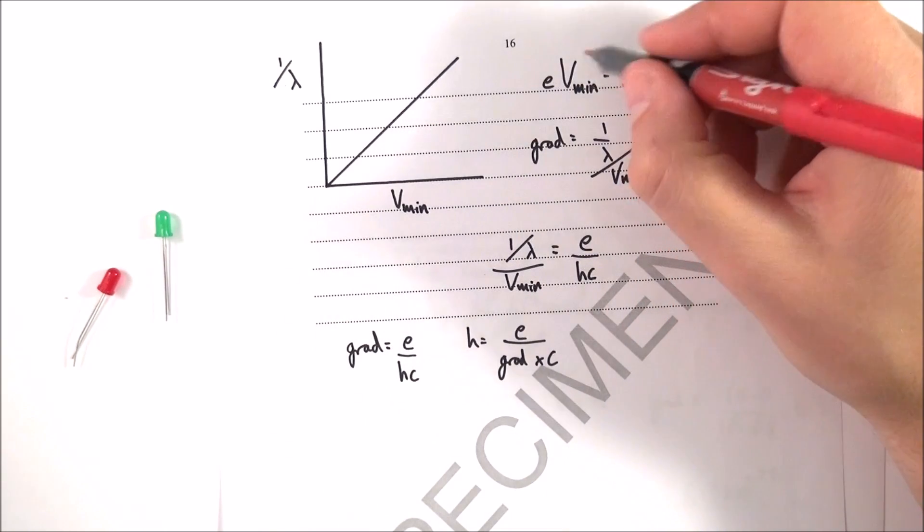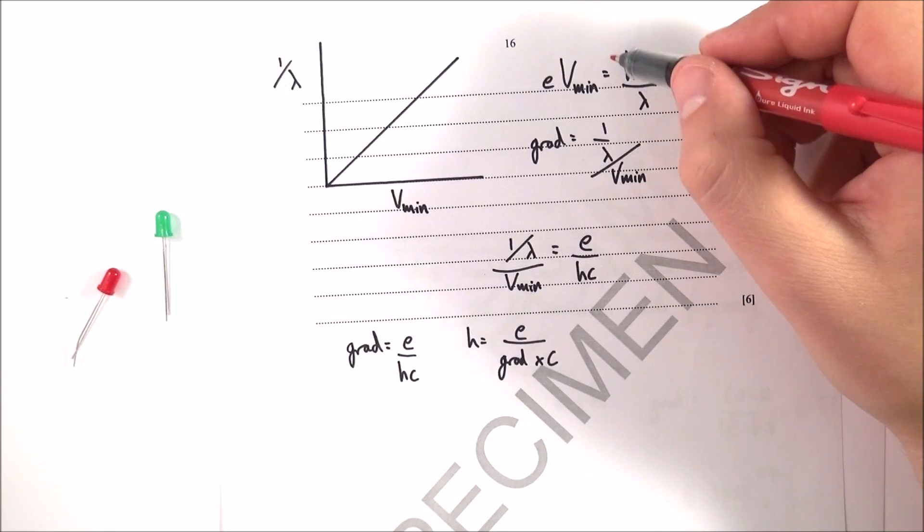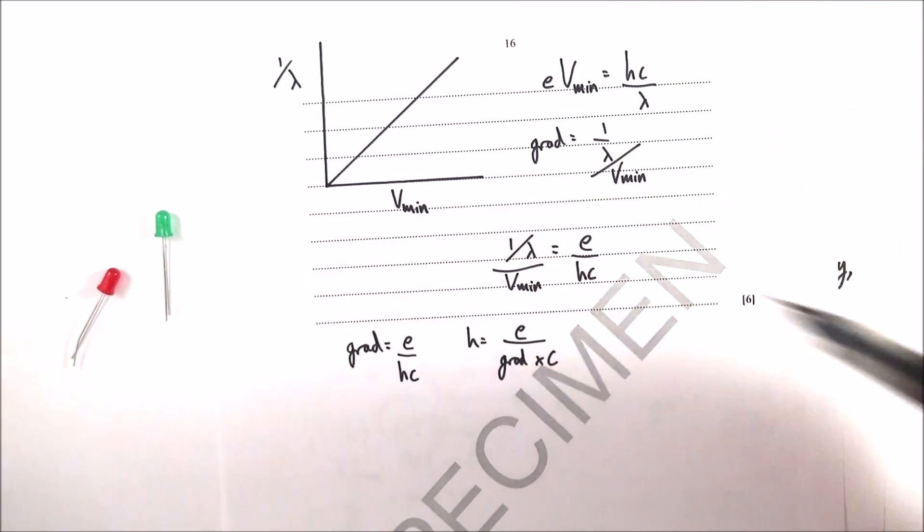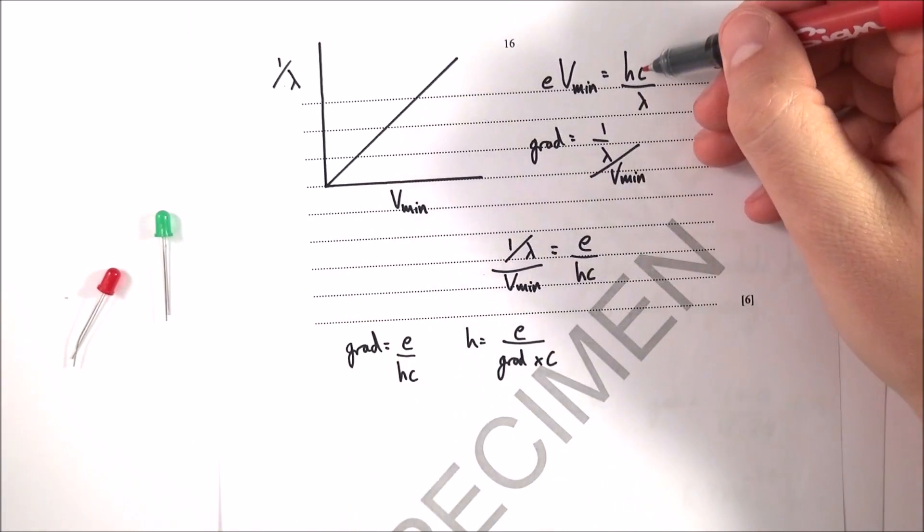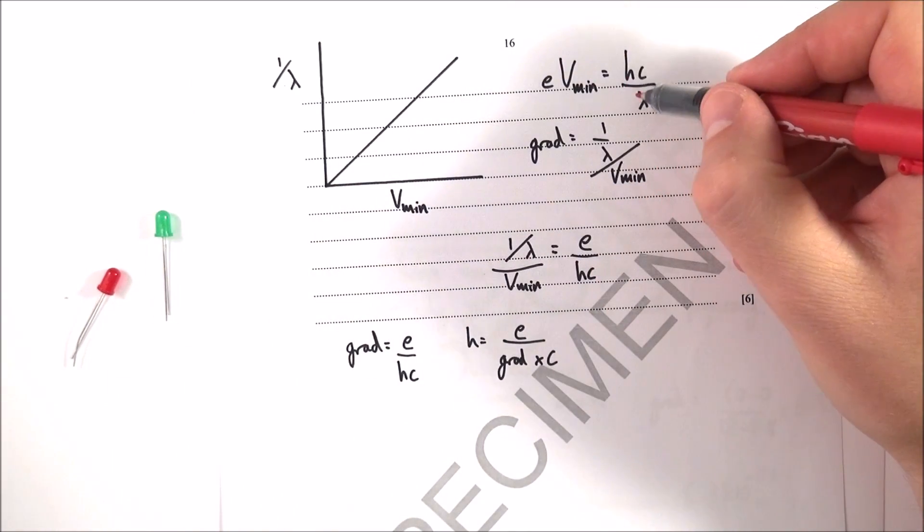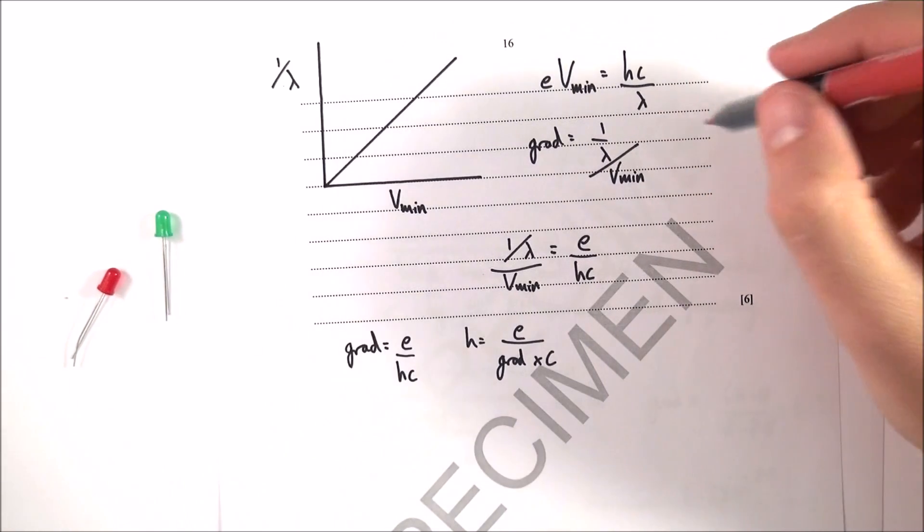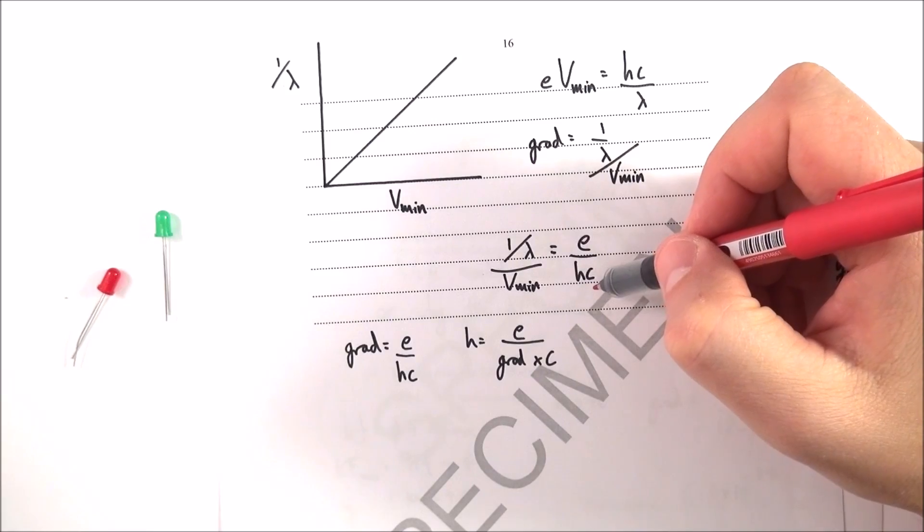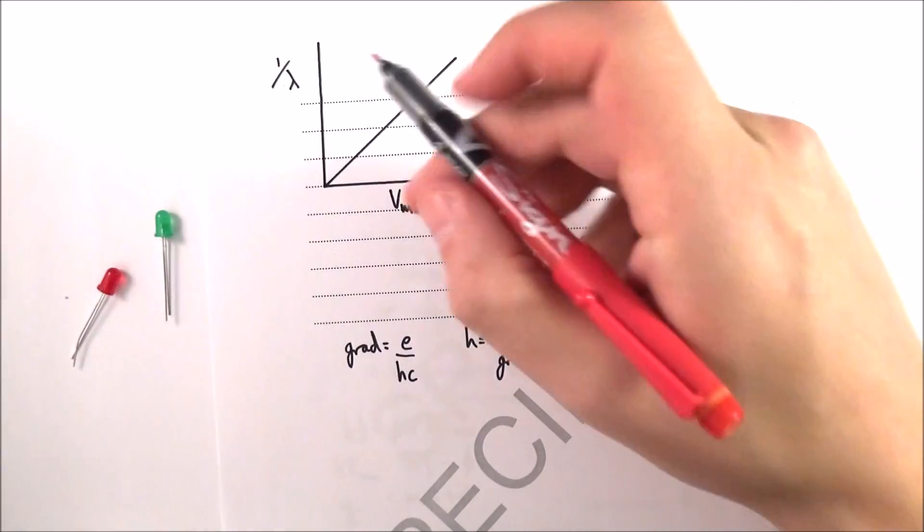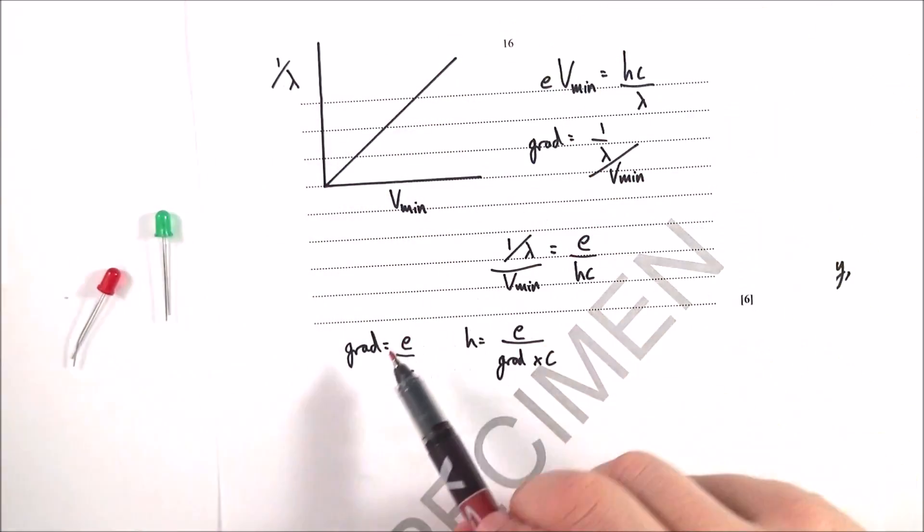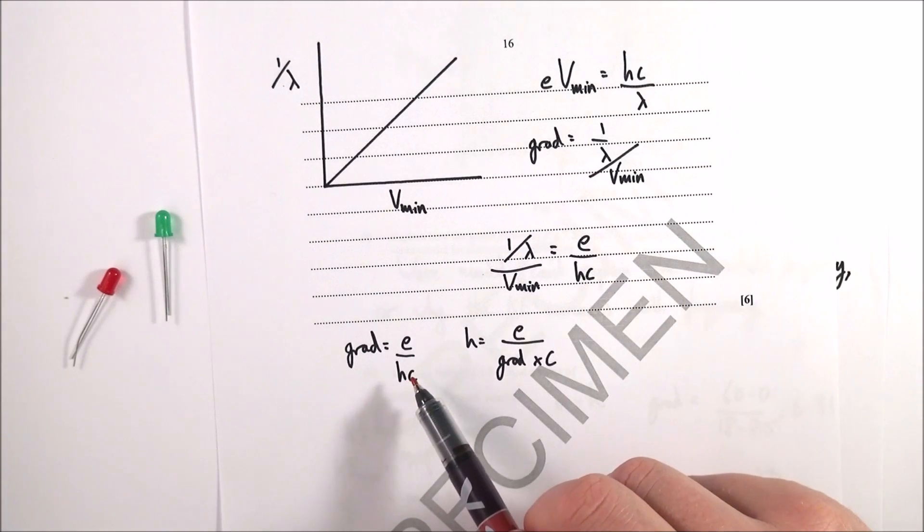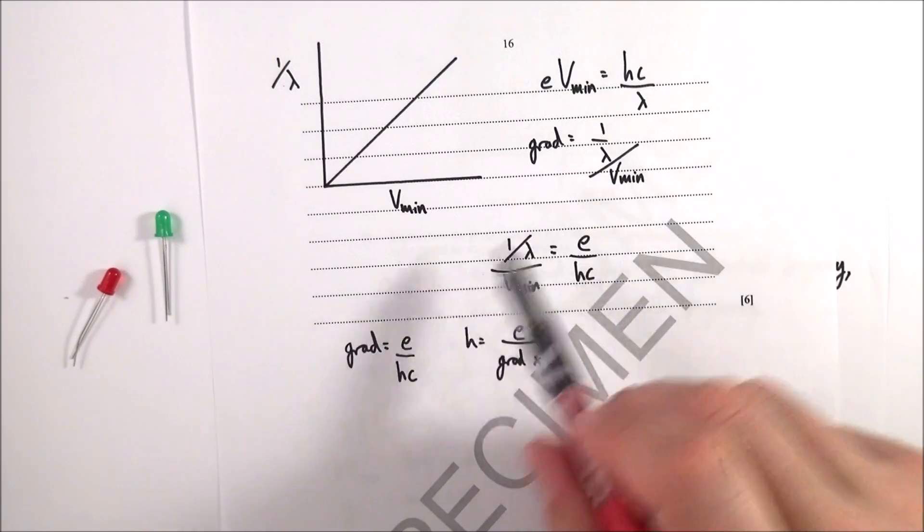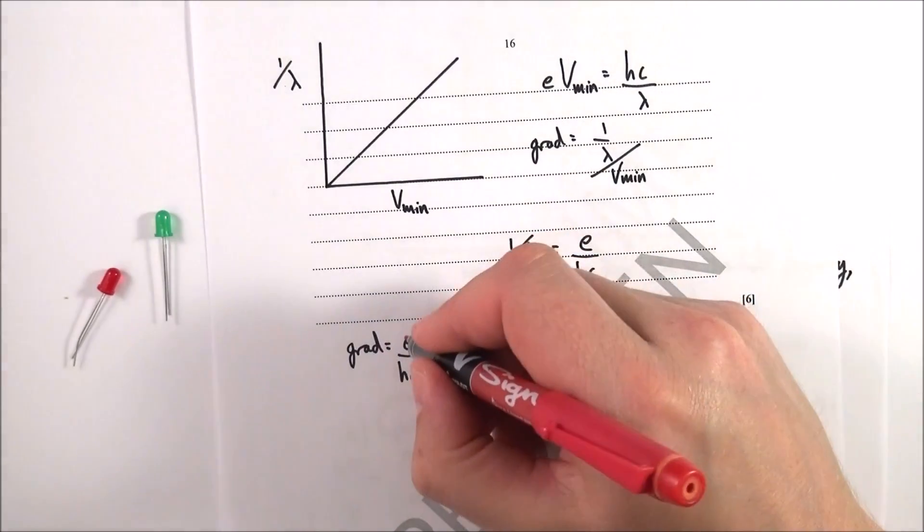We can rearrange this equation to make one over lambda over vmin the subject. Rearranging this, we can say that one over lambda divided by vmin equals e over hc. If you work out the gradient, the gradient equals e over hc.